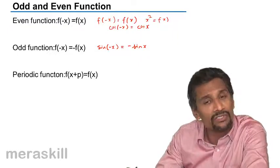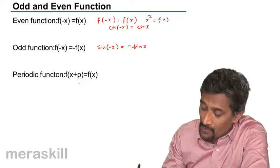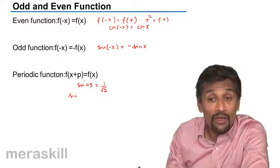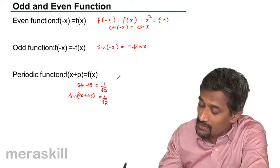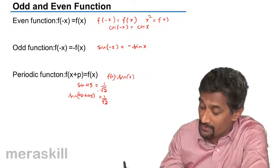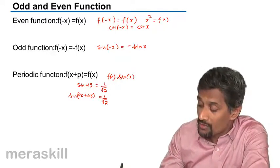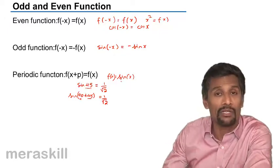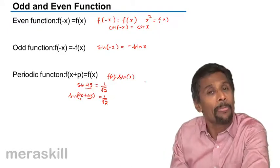When the domain value becomes opposite, the function still remains the same for an even function. A periodic function is of the form f(x+p) = f(x). For example, sin(45°) = 1/√2, and sin(135°) is also 1/√2. So sine is a periodic function because at regular intervals of 90°, the sine value repeats itself. Any function whose value repeats at regular intervals is called a periodic function.